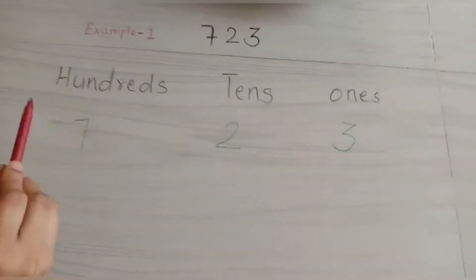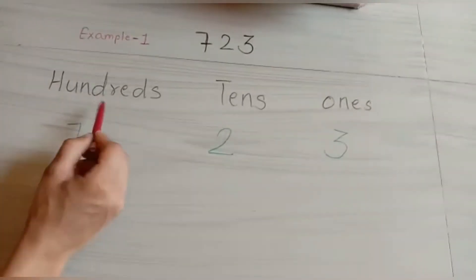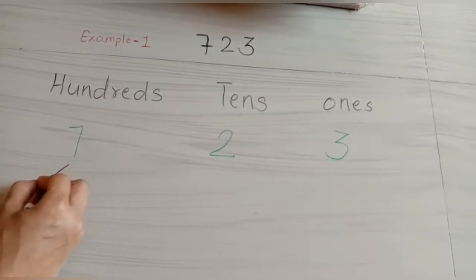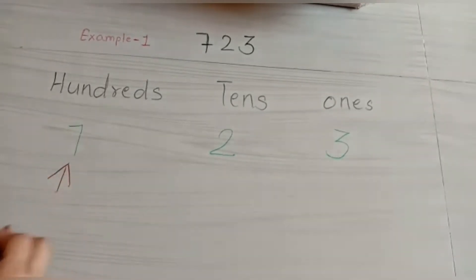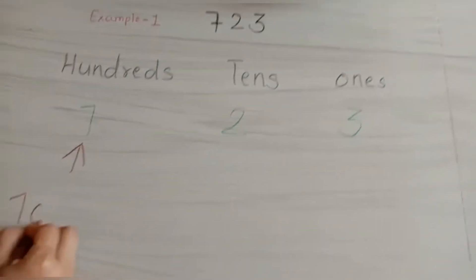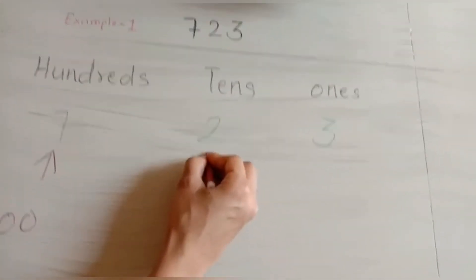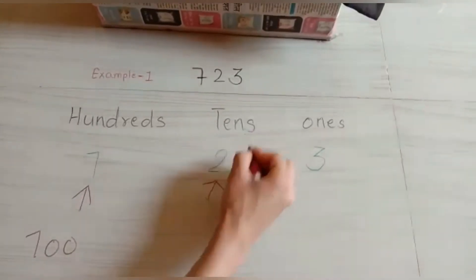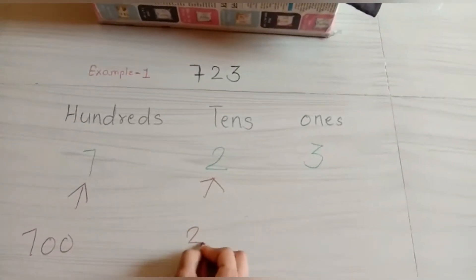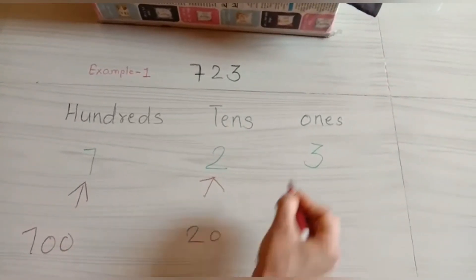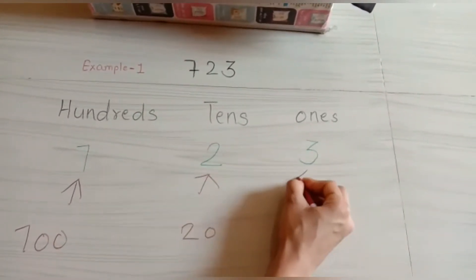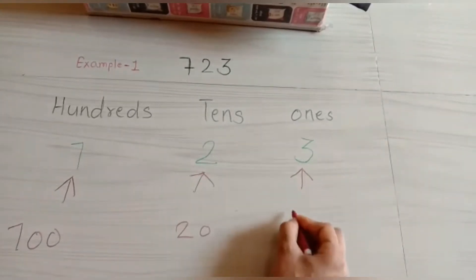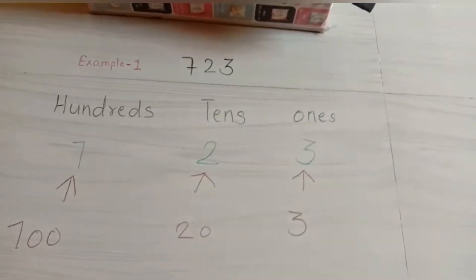We know that this digit shows the value of seven hundred. This digit shows the value of two tens which means twenty, and this digit shows the value of three ones which is three.